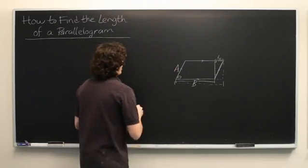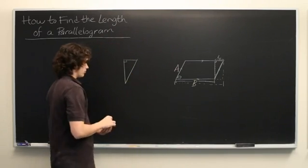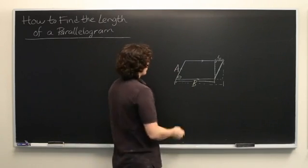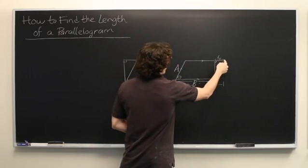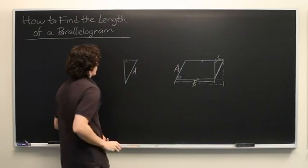So here we have our right triangle. Since this is a parallelogram, we know that this side and this side are the same length. So the hypotenuse of our triangle is of length a.